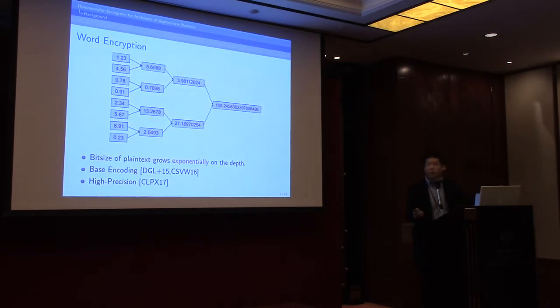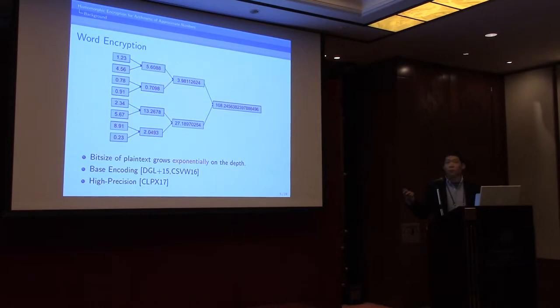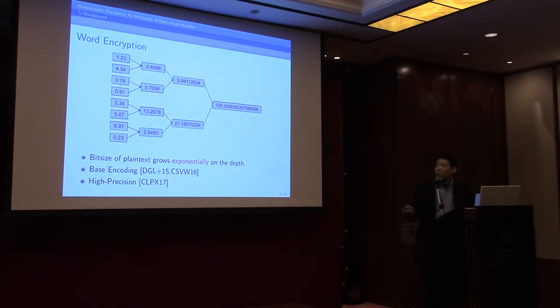The second approach is word-sized encryption. If you are given some real numbers, you can just quantize them into integers and encrypt them in a single ciphertext. But if you encrypt them in a single ciphertext, then the rounding operation cannot be performed on encrypted data. So as computation progresses, the size of plaintext grows exponentially on the depth of the circuit. Consequently, you cannot store this huge number in plaintext space anymore. There have been some researches to reduce the speed of growth of plaintext size, but they could not solve this exponential growth.